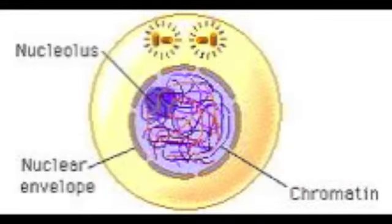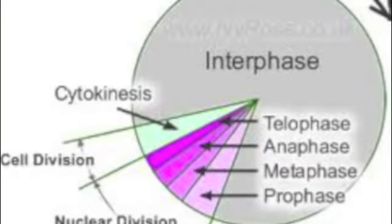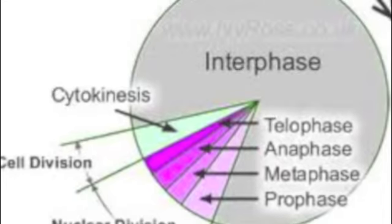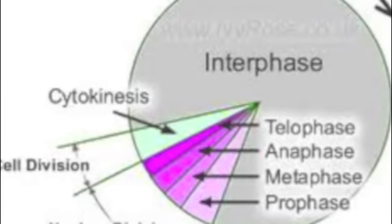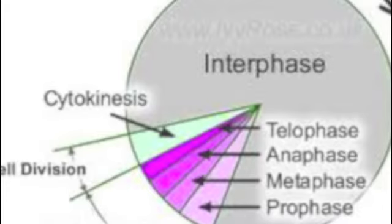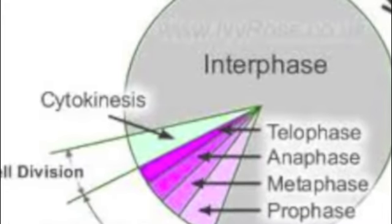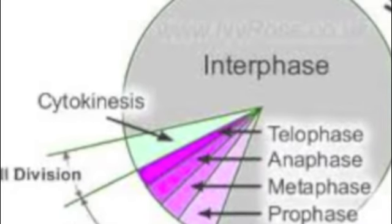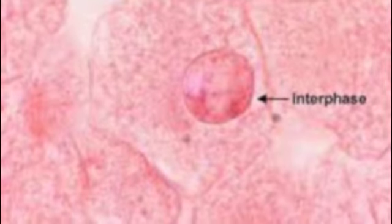Interphase is typically known as the resting phase, but there is a lot more to it. During interphase, there are three phases that occur: G1 phase, S phase, and G2 phase. G1 represents the cell's growing period. S phase is where the genetic material within the nucleus is replicated, because when the cells divide they only have half the DNA to make a complete daughter cell. The replication of the new DNA allows for the daughter cell to have the complete 46 chromosomes that they need. Lastly, G2 phase represents the continuing growth of the cell, which gets the cell ready for cell division.